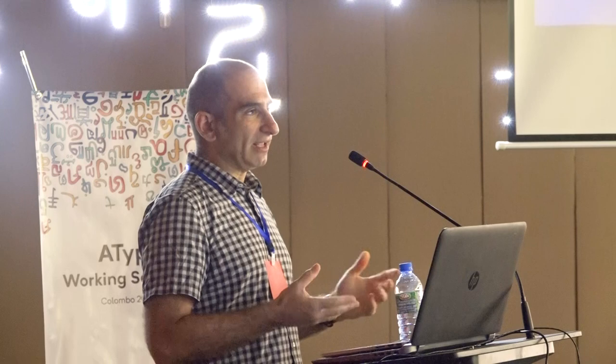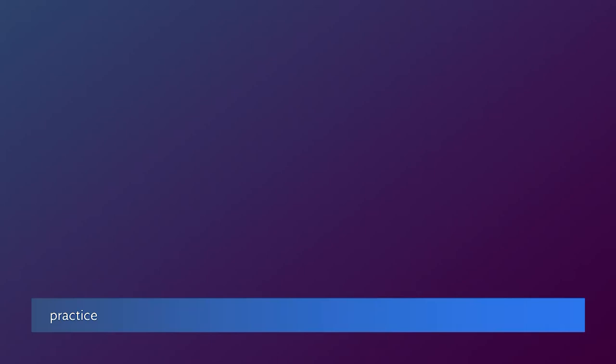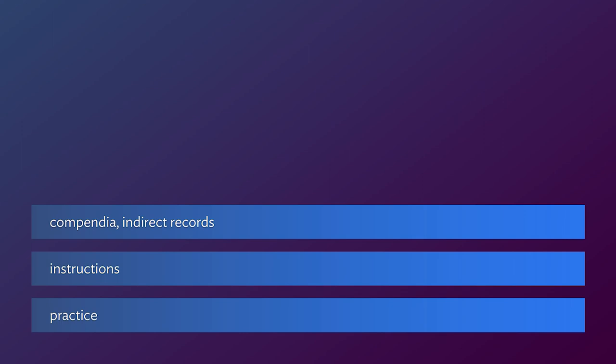A second problem has to do with our body of reference works and sources. In an engineering discipline I can point at a small shelf that will have the key texts needed. The same thing in typography doesn't apply. What we have is a lot of different things contributing to our knowledge — practice, instruction manuals, collections of things with pictures, indirect records, and historical accounts which might be quite personal and subjective.